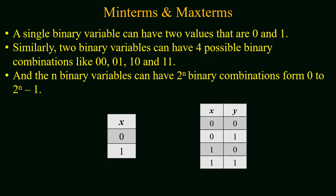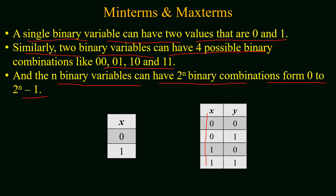So far we know that a single binary variable can have two values: 0 and 1. Similarly, if we have two binary variables, it can have four possible combinations: 00, 01, 10, and 11. Or if we have n binary variables, we can have 2^n binary combinations starting from 0 up to 2^n minus 1.